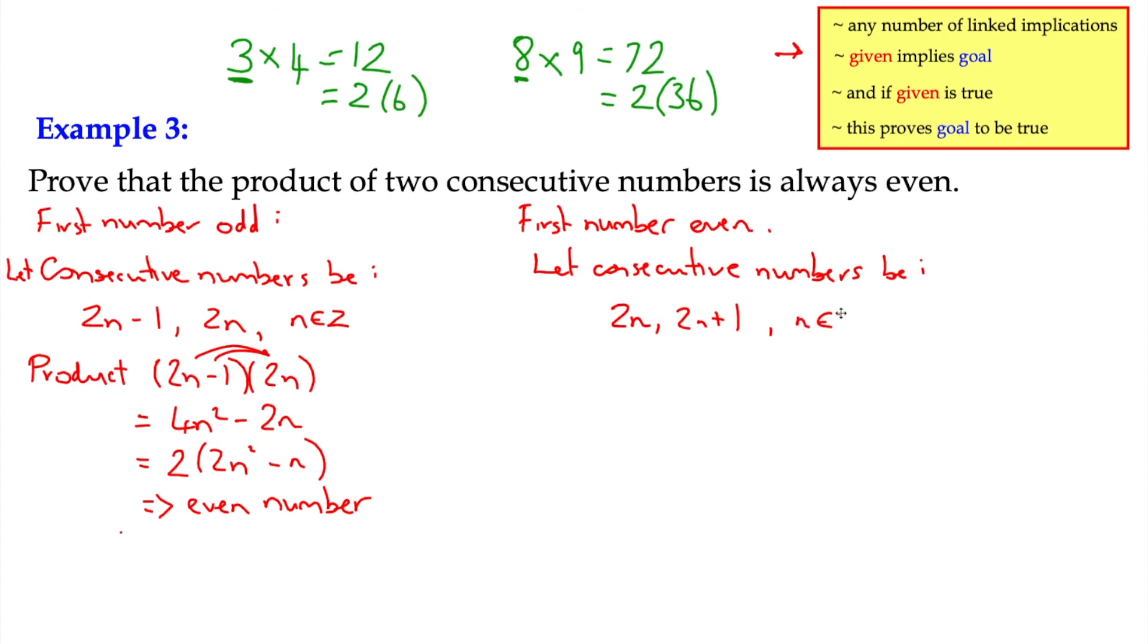Which means that the product in this case would be 2n multiplied by 2n plus 1, which we can write down as 4n squared plus 2n, which has a common factor of 2. And that implies, because 2 is a common factor, it implies that this expression must be even. In other words, in both cases, because n is any integer, which is an infinite set, it means that no matter what the value of the number is, if we multiply the two consecutive numbers together, it will always produce an even number.